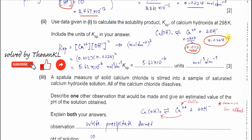The Ksp expression is: Ksp = [Ca²⁺][OH⁻]². The units work out as mol³ dm⁻⁹. Substituting: 0.012 × (0.0224)² gives Ksp = 5.62 × 10⁻⁶ mol³ dm⁻⁹. This is the solubility product for calcium hydroxide.